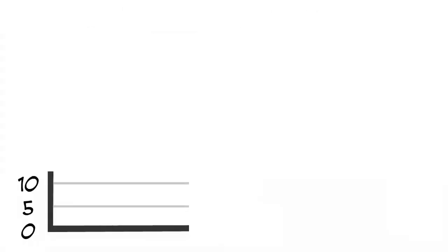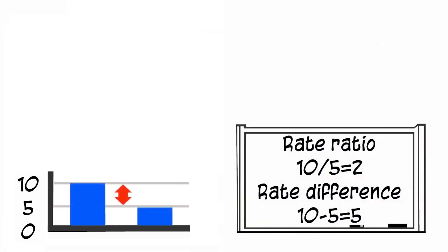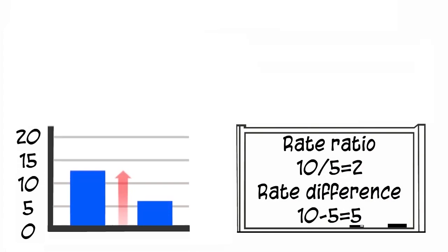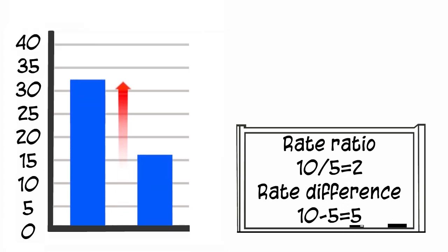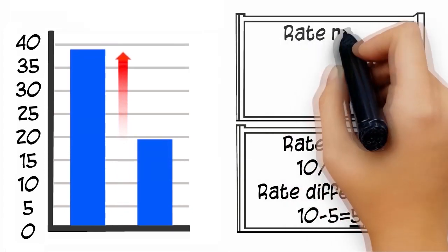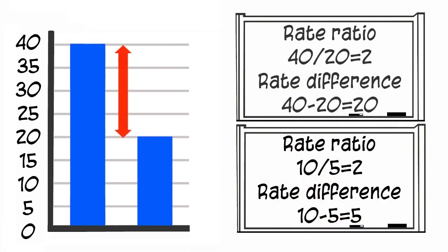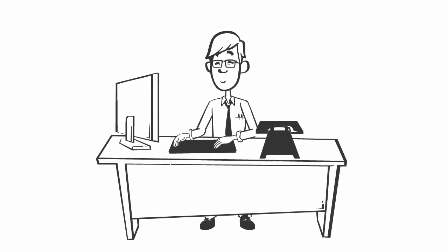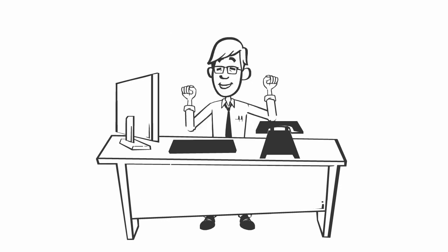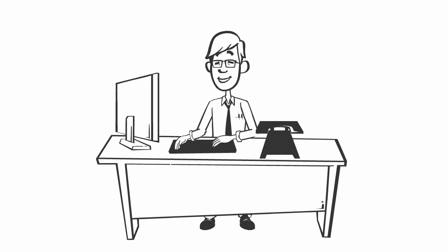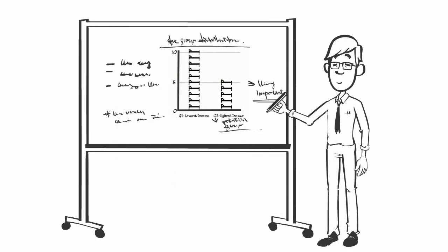Joe gets it. When the overall rates are lower, a small absolute difference may still result in a high level of relative inequality. When the overall indicator rates are higher, however, large relative inequality occurs only when there is also a large difference between the two income levels being compared. Joe now understands that the inequality measures are influenced by the underlying indicator rate, and that the conclusions drawn from inequality results based on the absolute and relative scales are not always the same. It is helpful to review both types of inequality measures as he examines the data.